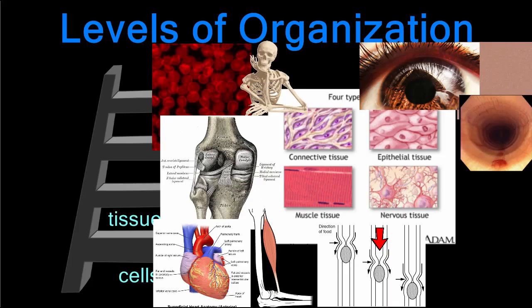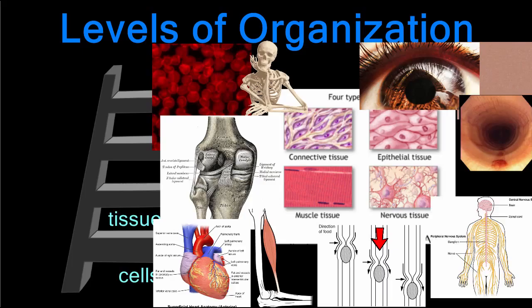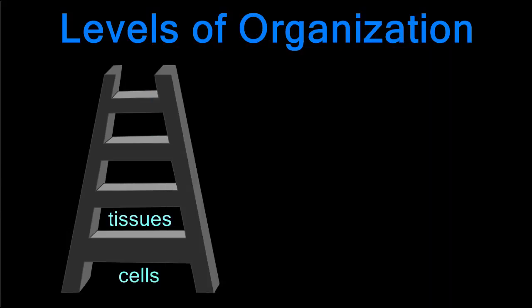There are three types of muscle tissue. Skeletal muscle allows you to move. Cardiac muscle is found in your heart and contracts rhythmically without you even having to think about it. Smooth muscle lines your esophagus and intestines. The contractions of these muscles are involuntary, meaning they are outside of your control.